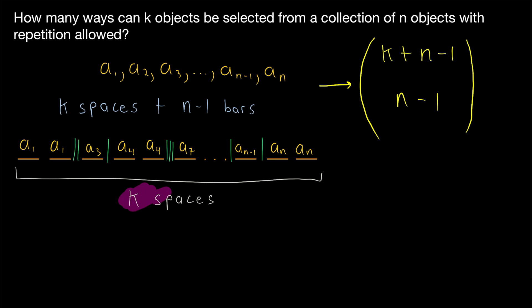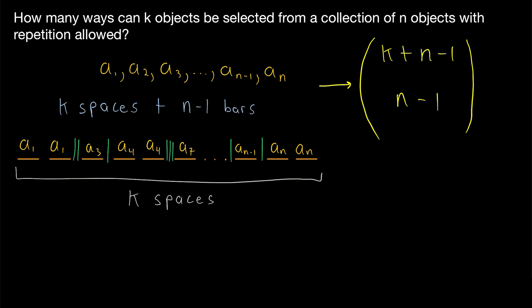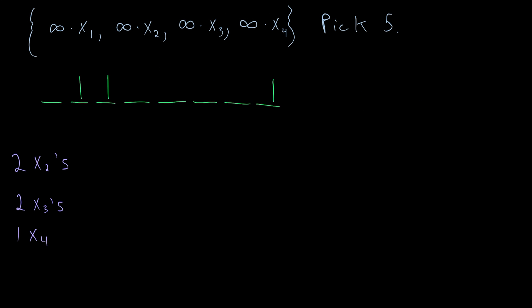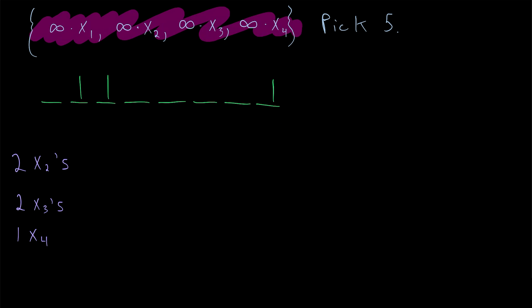So once more, instead of just having k spaces, we can think of it as having a total of k plus n minus 1 spaces, so that we have a space for the bars as well. The number of ways that we can pick n minus 1 spaces for our bars from those k plus n minus 1 spaces is the number of combinations of k objects from a collection of n with repetition allowed. Now let's look at two quick examples to further convince you of this correspondence between a combination of objects and spaces with bars.